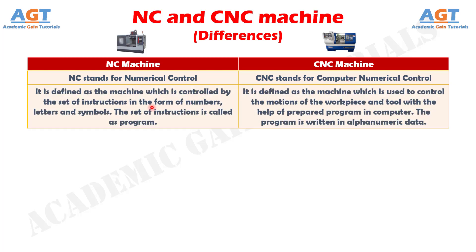Number 2. NC machine is defined as the machine which is controlled by a set of instructions in the form of numbers, letters, and symbols. The set of instructions is called a program. Whereas, CNC machine is defined as the machine which is used to control the motions of the workpiece and tool with the help of a prepared program in a computer. The program is written in alphanumeric data.